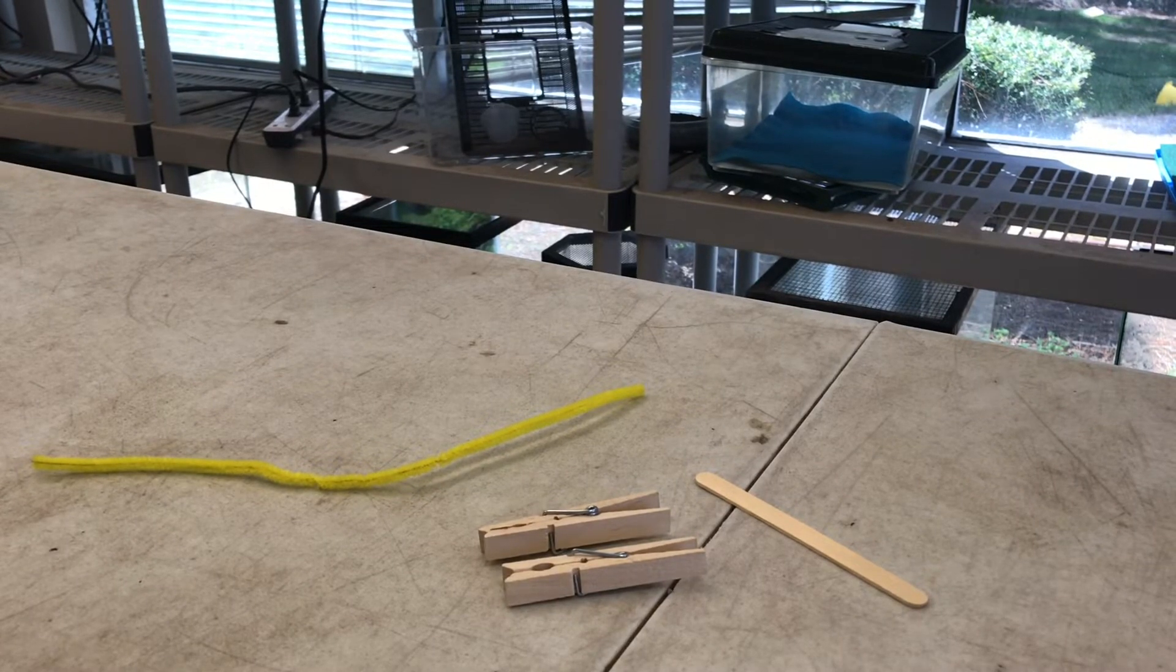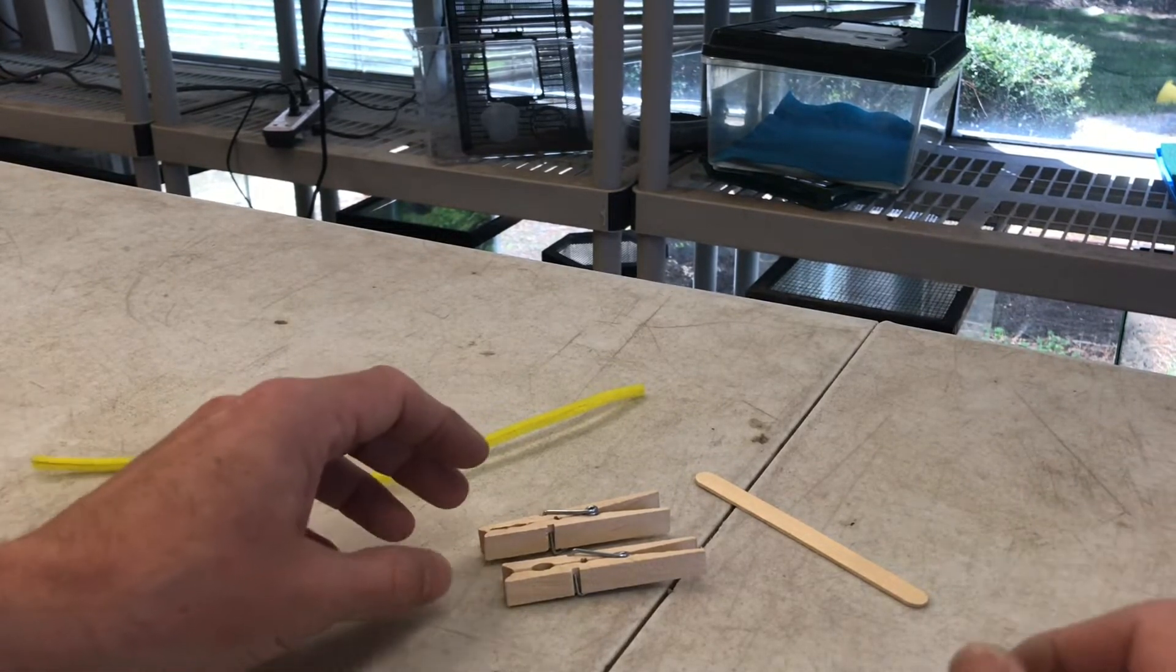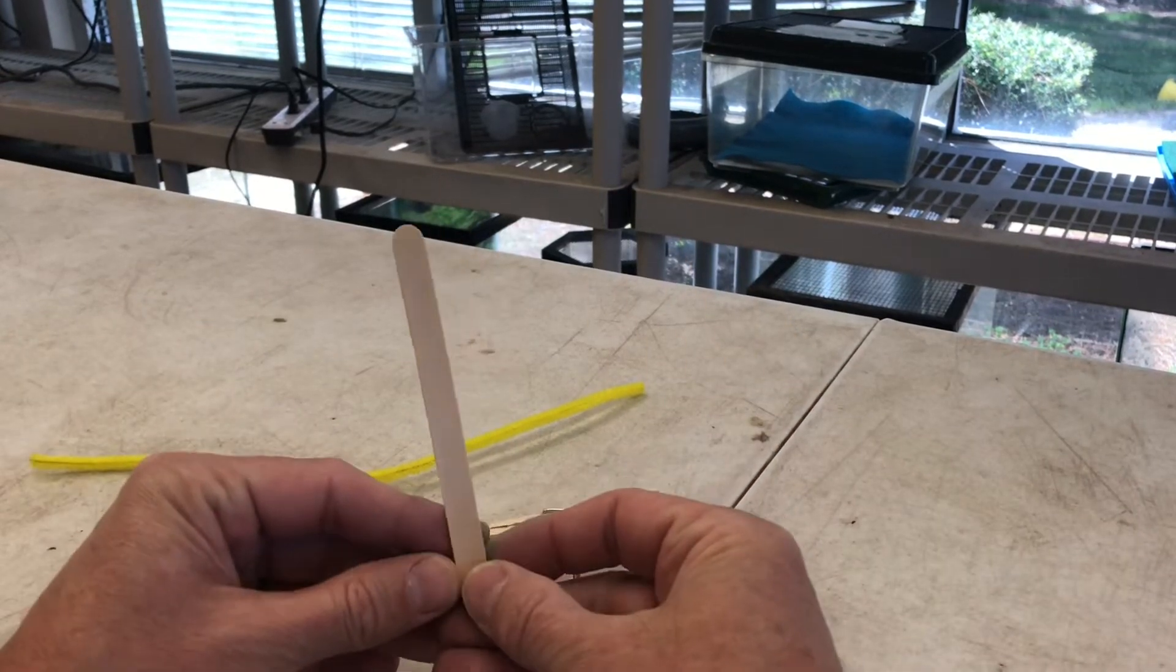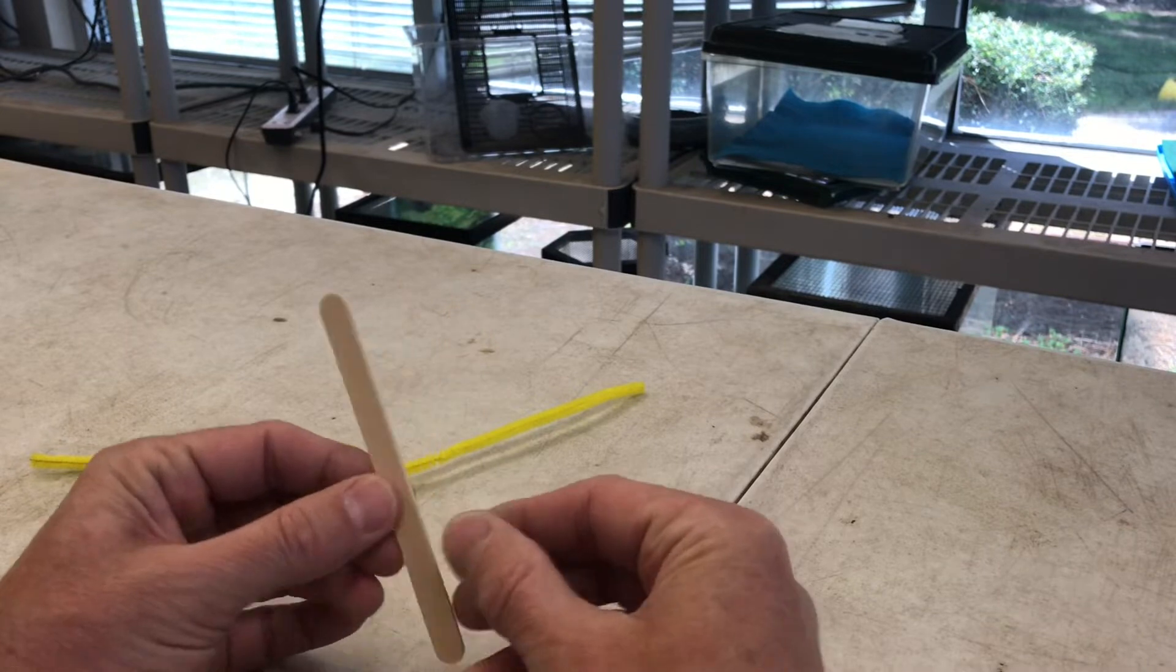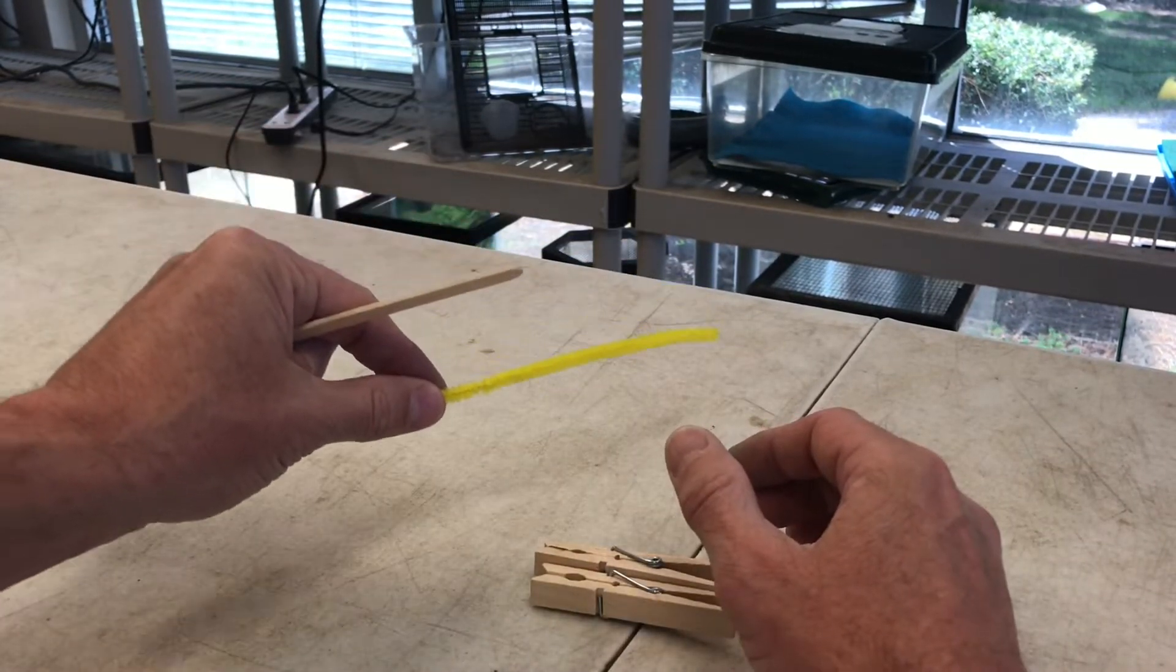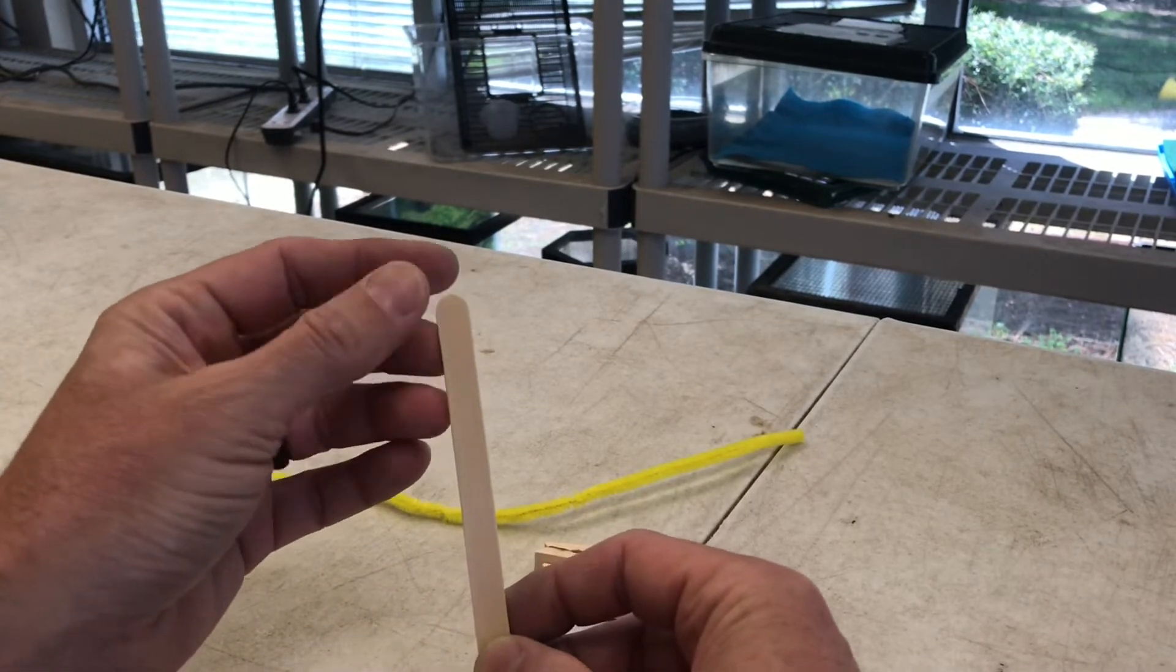All right, here's a super simple and super fun experiment I like to call balancing buddy. So we're going to make a little friend that can balance really easily on things. All we need is a popsicle stick, two clothespins, and a pipe cleaner. This is going to be kind of the head of your buddy.